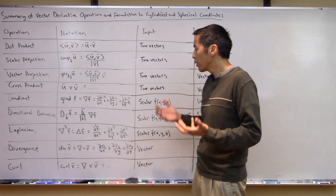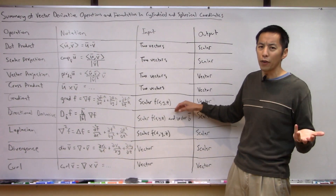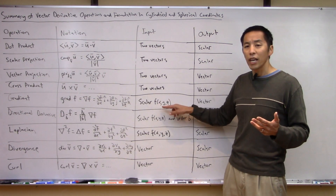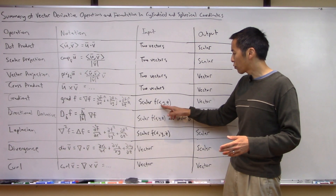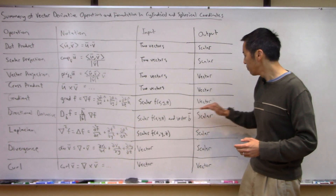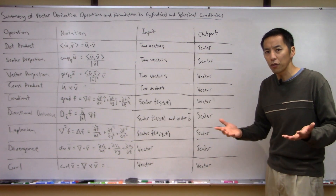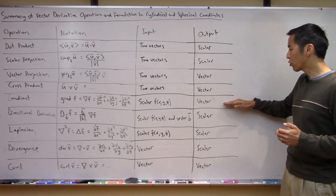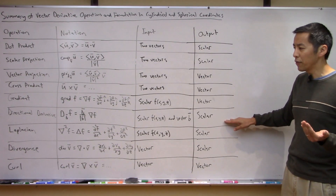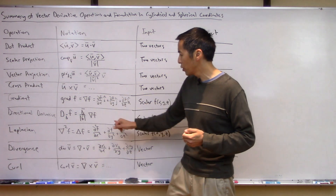The vector projection takes the scalar projection and gives it a direction — a vector direction in the direction of v. So again two vectors go in, but now what you get out is also a vector, pointing in the direction of vector v. Then we talked about the cross product, denoted as vector u crossed with vector v. You give it two vectors and what comes out is another vector that is perpendicular or normal to both input vectors u and v.